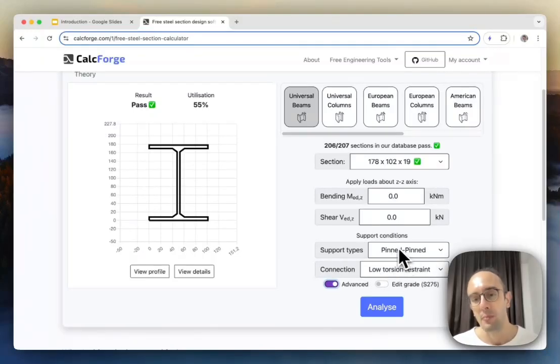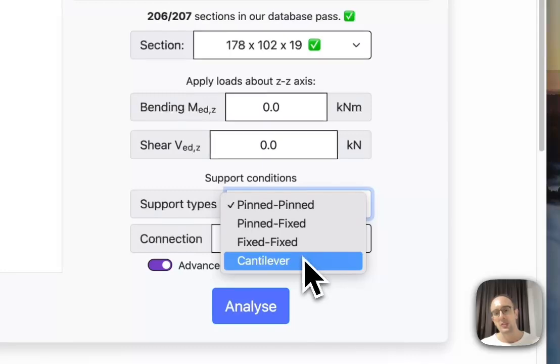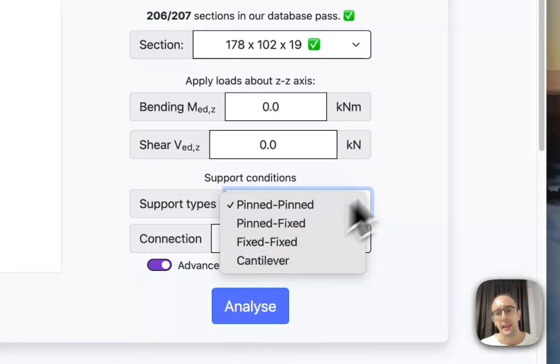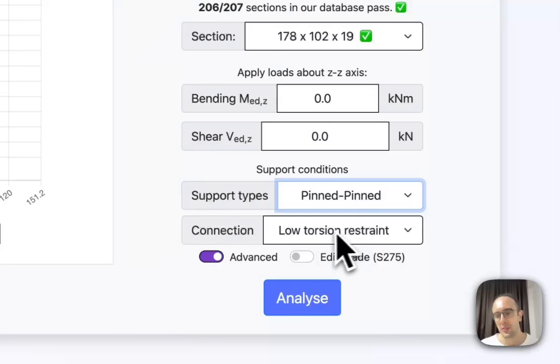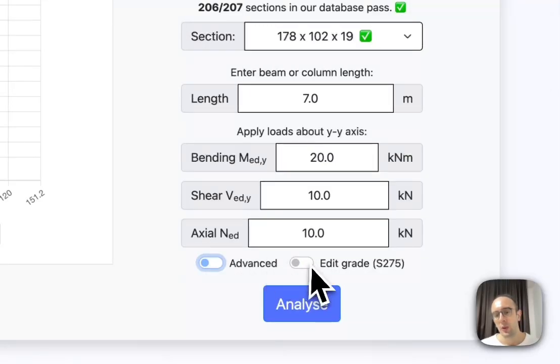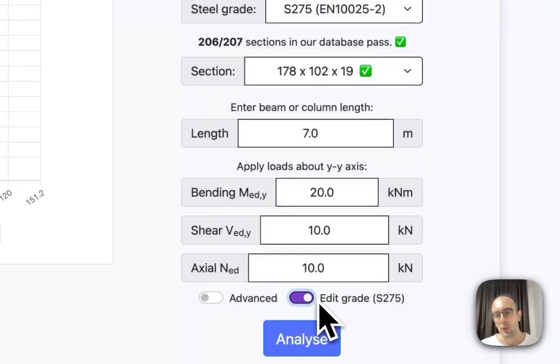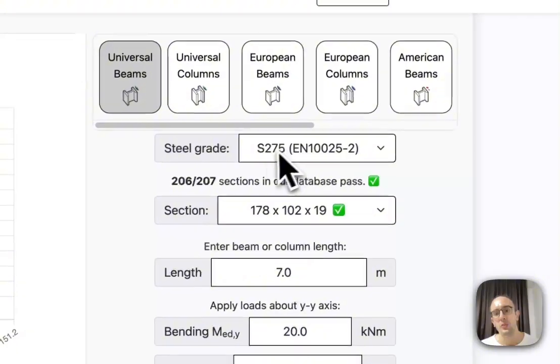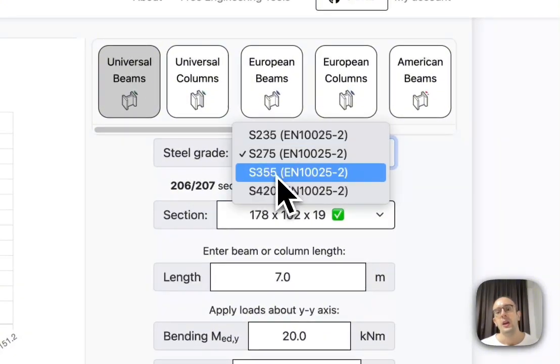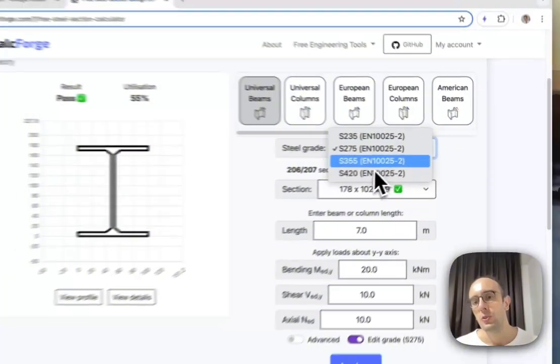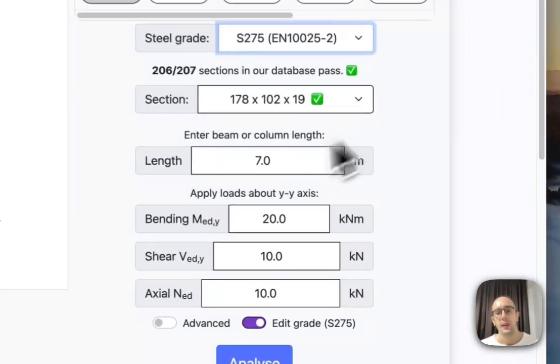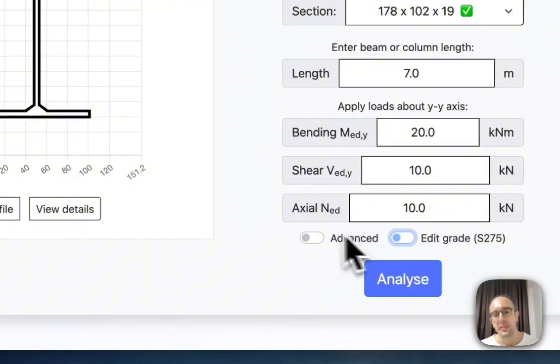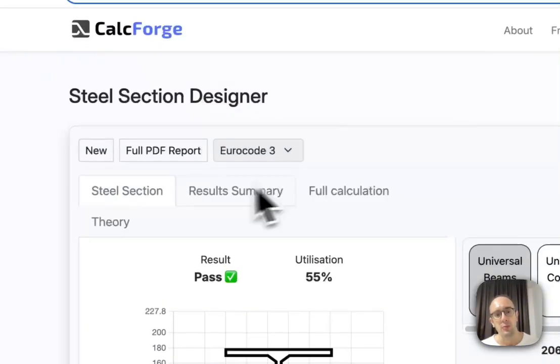In this case, it's simply supported on either ends but I can change this to be fixed-fixed cantilever for different support conditions. So I can also edit the strength or the grade of the steel. So 275 is very commonly used but also 355 is used quite commonly now as well which is higher strength steel, 420s high strength steel.